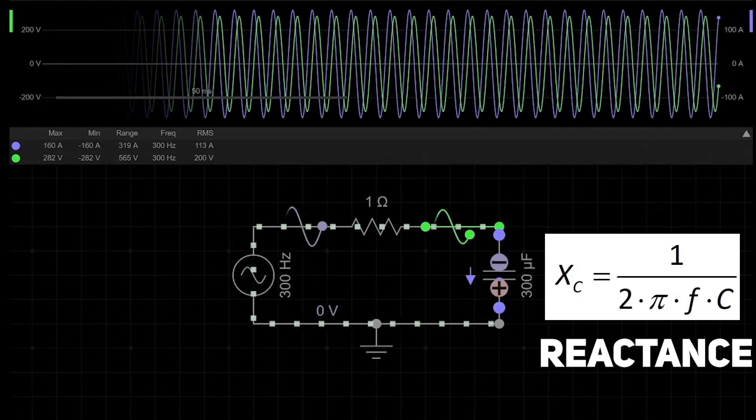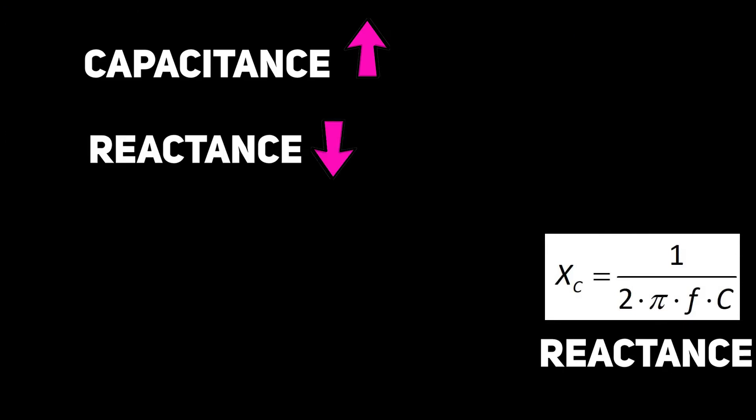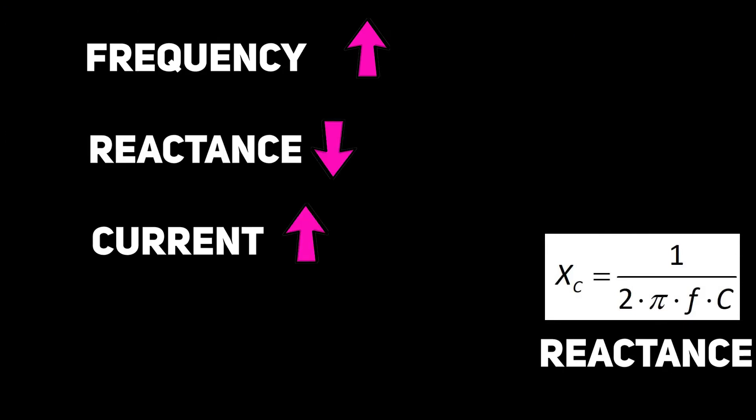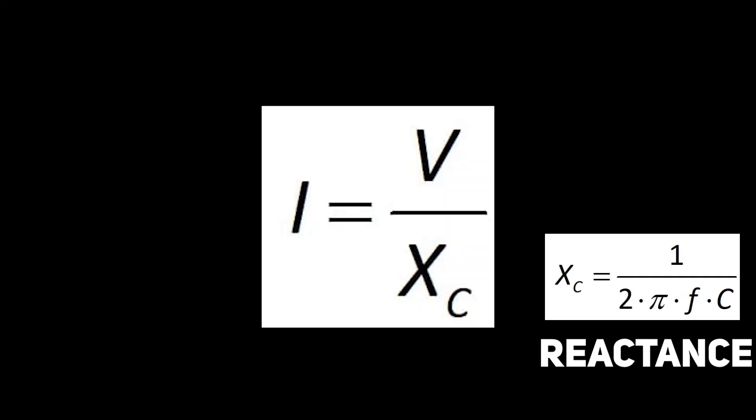As you can see from the formula, higher capacitance means lower reactance and higher current. Same for frequency. Higher frequency means lower reactance and higher current. And now we can easily calculate capacitor current, for example, using Ohm's law.